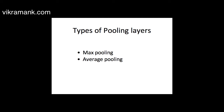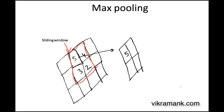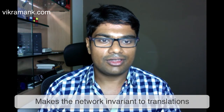Two commonly used pooling layers are max pooling and average pooling. In max pooling, a sliding window — for example 2x2 — moves across the output of the activation function and captures the maximum value within that window, outputting it into a separate matrix. By doing so, it captures the essential information, discards unwanted noise, and makes the network robust and translation-invariant even when data points shift slightly.